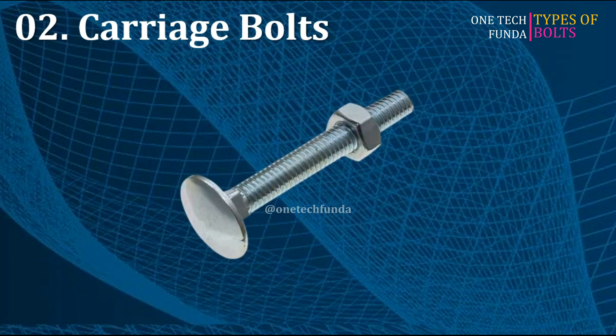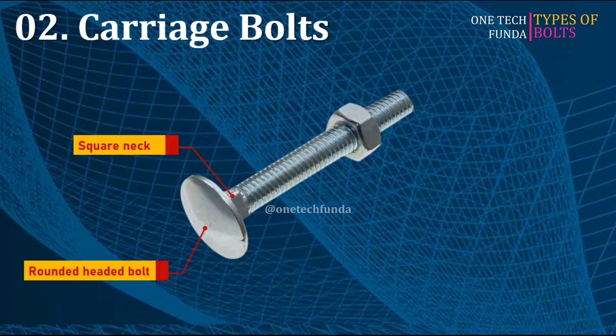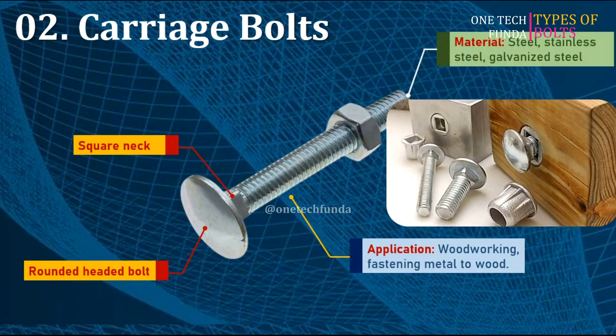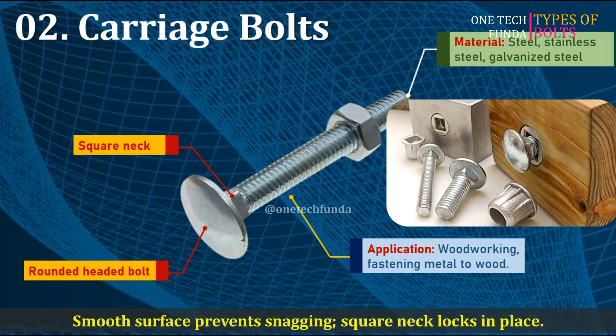Carriage bolts are round-headed bolts with a square neck under the head to prevent rotation. Often used in woodworking and fastening metal to wood. Materials include steel, stainless steel, and galvanized steel. The main advantage is a smooth surface that prevents snagging, while the square neck locks in place.